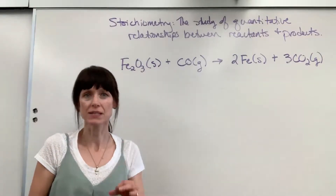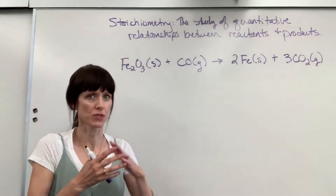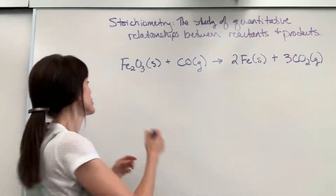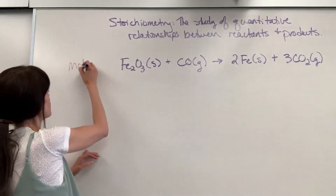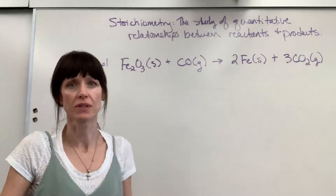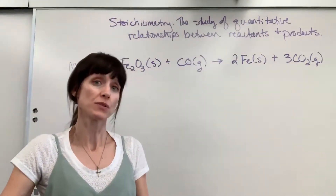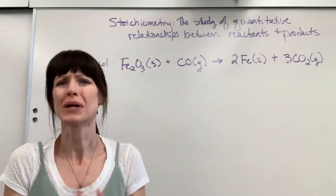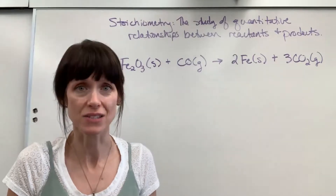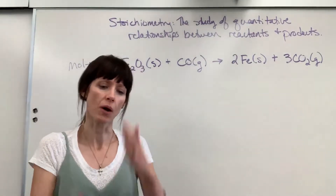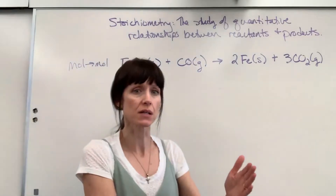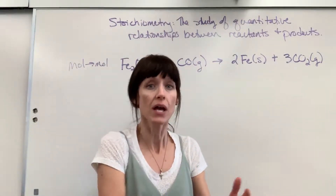This is the most basic type of stoichiometry — going from mole to mole. You're given moles of one compound and you want to find moles of another compound. When do you know you have to do stoichiometry? It's when you're given information about one compound but you want the answer about another compound.